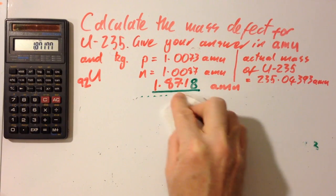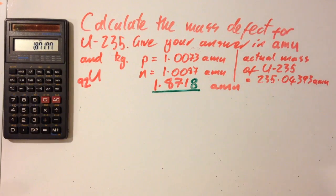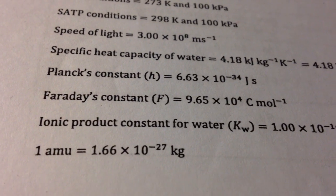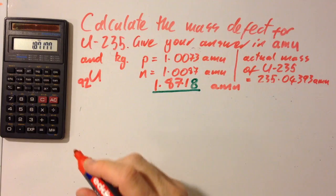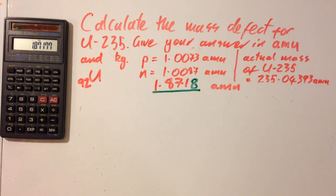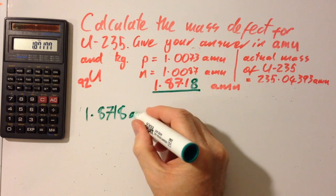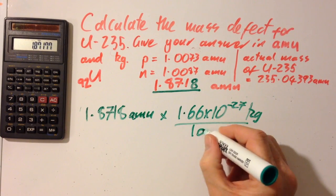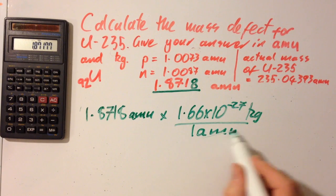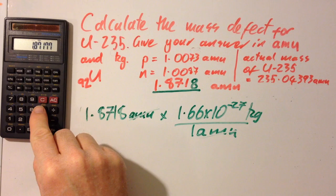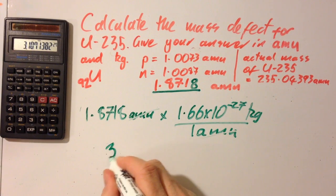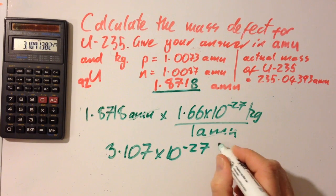Now, I also want it in kilograms. And so using this part of the data booklet, page two, you can see that one AMU is 1.66 times 10 to the minus 27 kilograms. Alrighty. So to convert this into kilograms, 1.8718 AMU multiplied by 1.66 times 10 to the minus 27 kilograms per AMU. So that comes out at 3.107 times 10 to the minus 27 kilograms. But we're not quite finished.